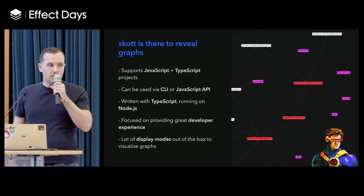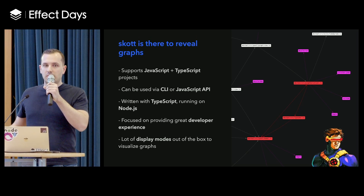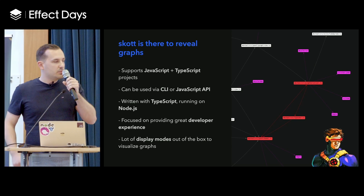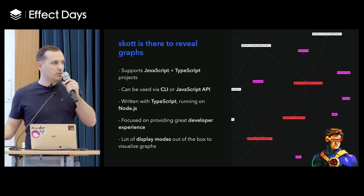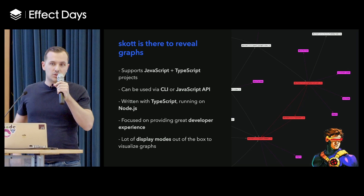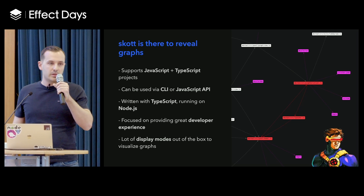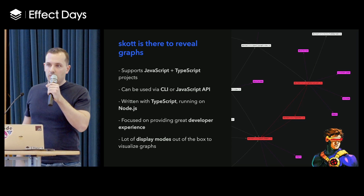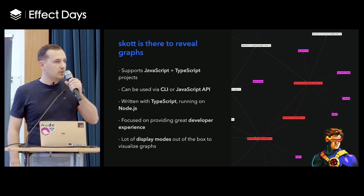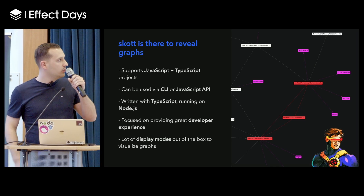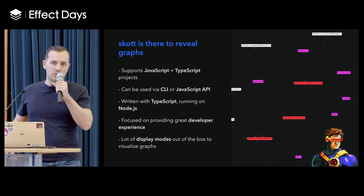This is where I started to think about a tool that will unleash some of that power by exposing APIs and visualization tools to help developers benefit from them. This is what Scott is. Scott is a static analysis tool that will basically go through your file tree and generate a graph from it. The focus of Scott is to provide a great developer experience and to expose primitives and reveal all the information that could be useful, but that is usually hidden and abstracted.